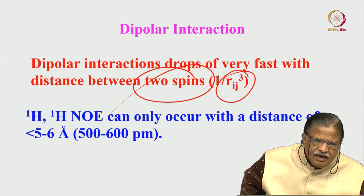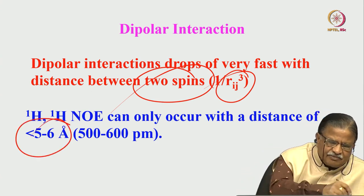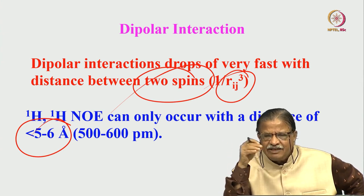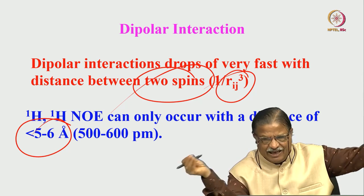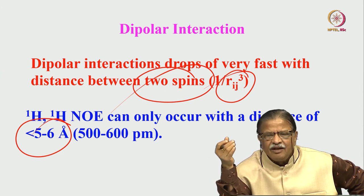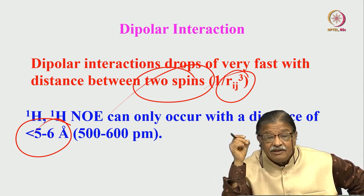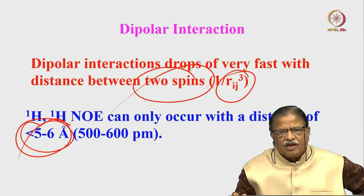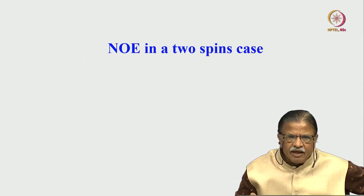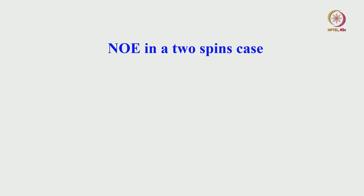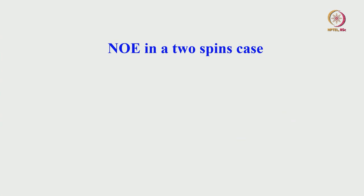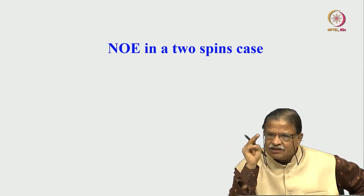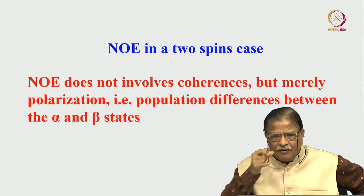The dipole coupling drops off as 1/r_ij³, but NOE goes as 1/r_ij⁶ because NOE involves two dipoles, each contributing 1/r_ij³. NOE can be observed when the distance between spins is less than 5 to 6 Ångströms. As spins come closer, the NOE becomes stronger and stronger; as the distance exceeds 5–6 Å, the NOE becomes very weak or unobservable. This means we can extract distance information for internuclear distances up to about 5–6 Å — especially proton-proton NOE.